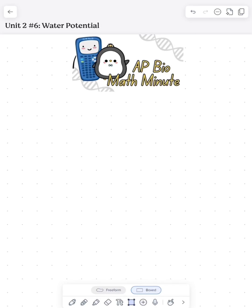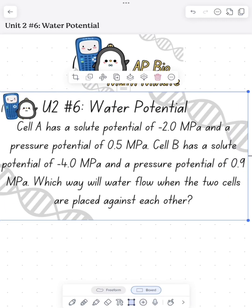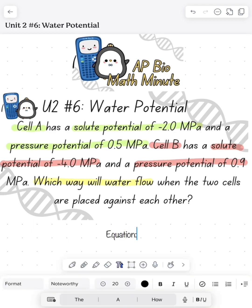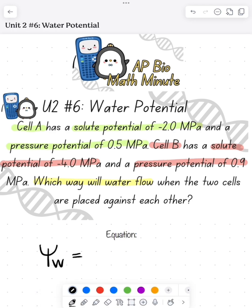What's up, AP Bio Math Minute. Today we're going to do a little AP Bio Math Minute looking at water potential. We have two different cells. Cell A has a solute potential of negative 2 megapascals and a pressure potential of 0.5 megapascals. Cell B has a solute potential of negative 4 megapascals and a pressure potential of 0.9 megapascals. We need to figure out which direction the water will flow when these two cells are placed against each other.